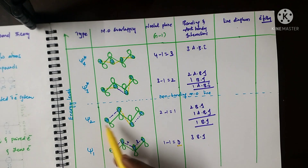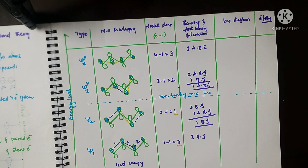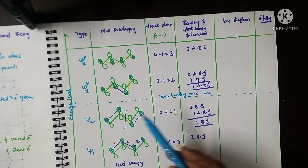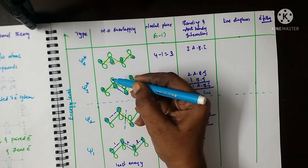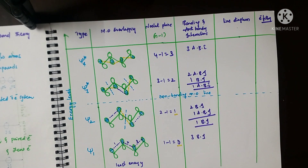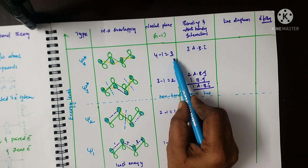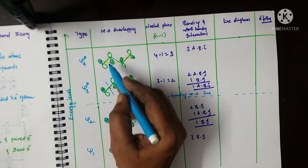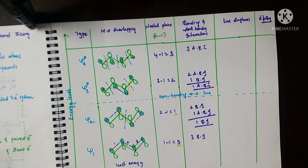In psi 2, there is one nodal plane, located at the point of anti-bonding interaction. In psi 3 star, there are two nodal planes — one between the first pair of anti-bonding lobes, and another between the second pair of opposite-direction overlapping lobes. In psi 4 star, there are three nodal planes: one, two, and three.